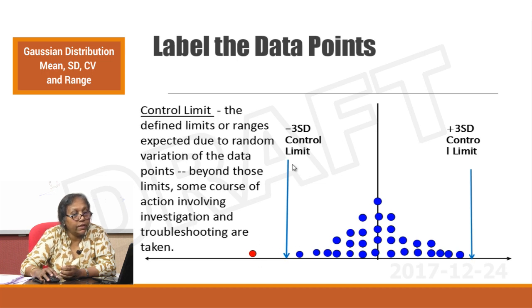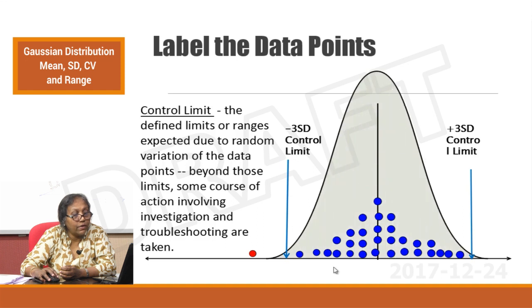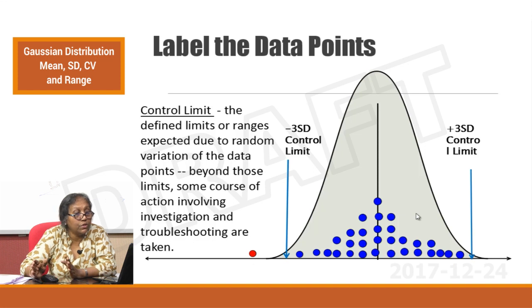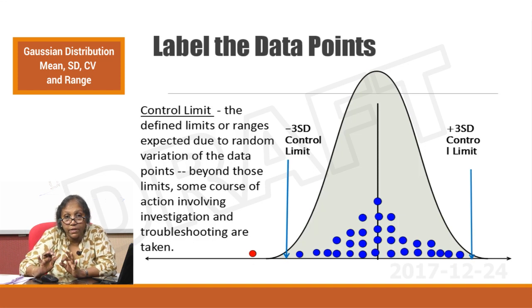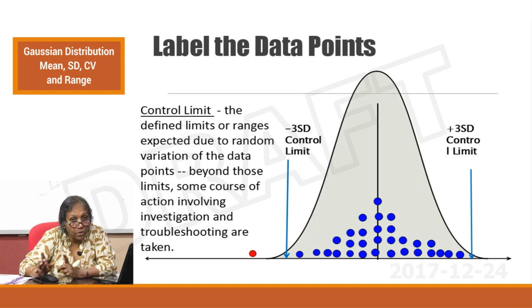These are the ±3 SD control limits defining the Gaussian, and one point is clearly an outlier. Since you have the Gaussian defined and something is going outside of it, it immediately warns you there is an error. This is how you use your Gaussian to understand error build-up in your analytical system.